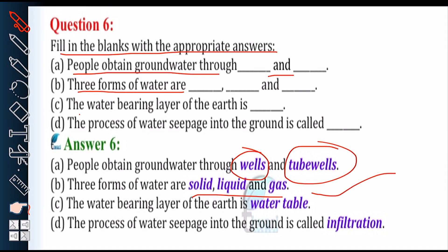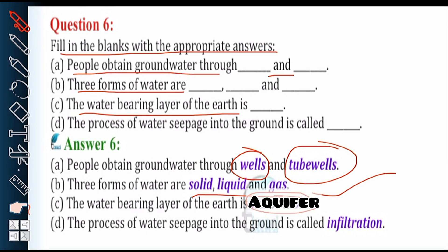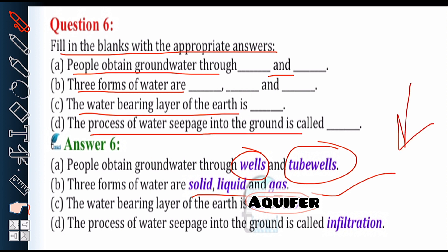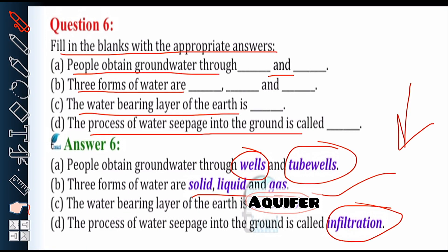Next: the water-bearing layer of the earth is — instead of writing 'water table,' you will write 'aquifer,' spelled A-Q-U-I-F-E-R. Last one: the process of water seepage into the ground is called infiltration.